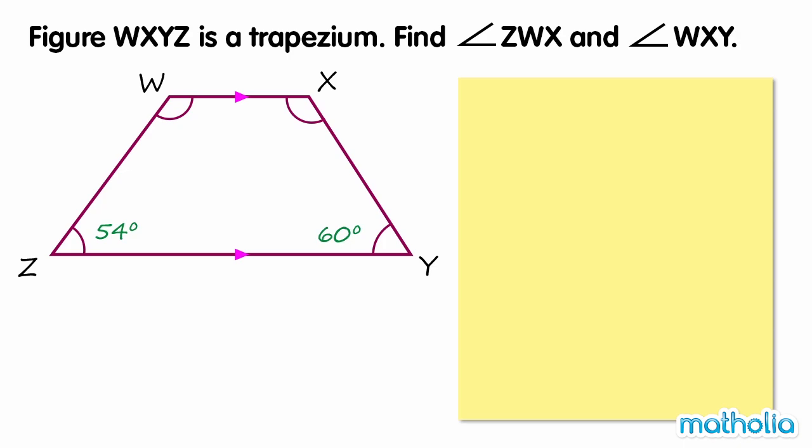Figure WXYZ is a trapezium. Find angle ZWX and angle WXY. Recall that the sum of angle pairs between parallel lines is 180 degrees.